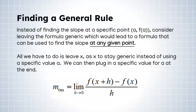Here's the idea. Now what we want to do is find a general rule. Instead of finding the slope at a specific point A comma F of A, consider leaving the formula generic, which would lead us to a formula that can be used to find the slope at any given point. All we have to do is leave X as X to stay generic instead of using a specific value A. We could then plug in a specific value for A at the end. So the idea is we're going to not plug in a specific number for the X, like 2 or 3 or negative 1. We're going to just leave it X and generate a formula that could be used to find the slope of the tangent line at any point we want. So we're actually going to find the slopes after the fact, not while we're doing the work. Might take a little bit of time to understand this, but it's going to be pretty cool.